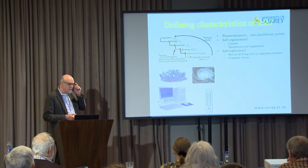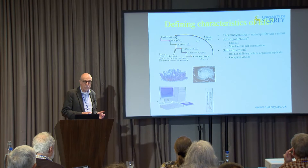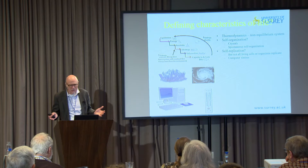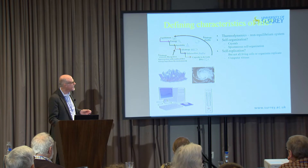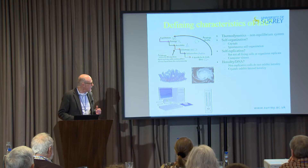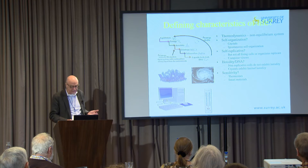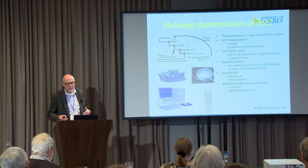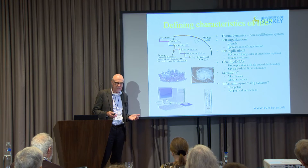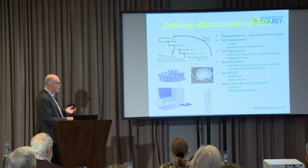Self-organization - the kind of things that happen in tornadoes and the red spot of Jupiter - and self-replication: was that the key characteristic of life? Not all living cells divide; red blood cells don't divide but they're still alive. Buddhist monks and Catholic priests don't replicate supposedly, but they're still living. Computer viruses replicate very well without being alive. Crystals exhibit heredity. Information processing - a lot of people say life is really about that, which it certainly is, as is everything else in the universe.